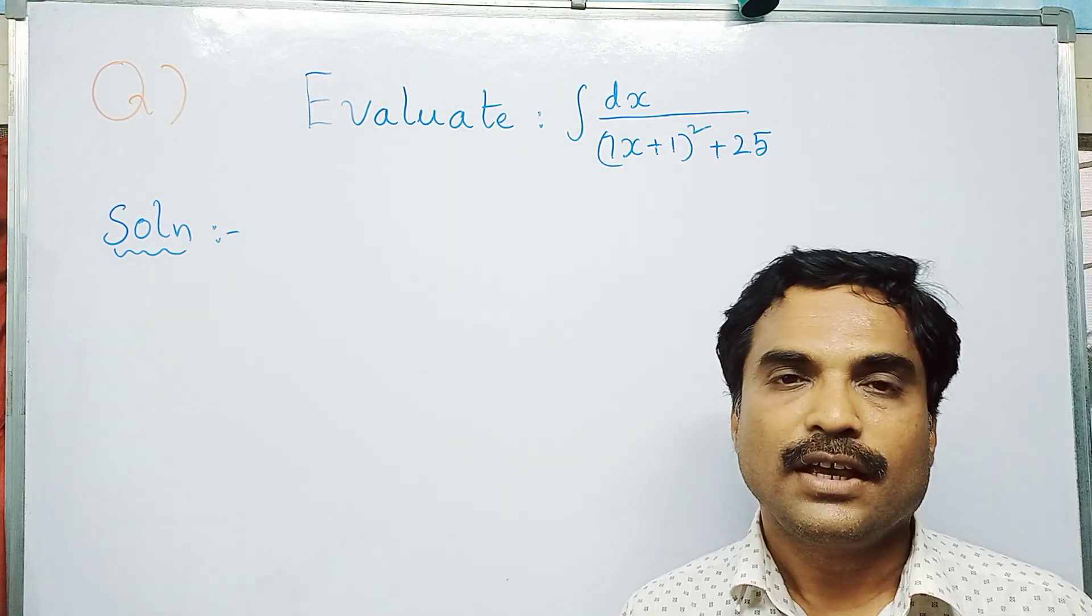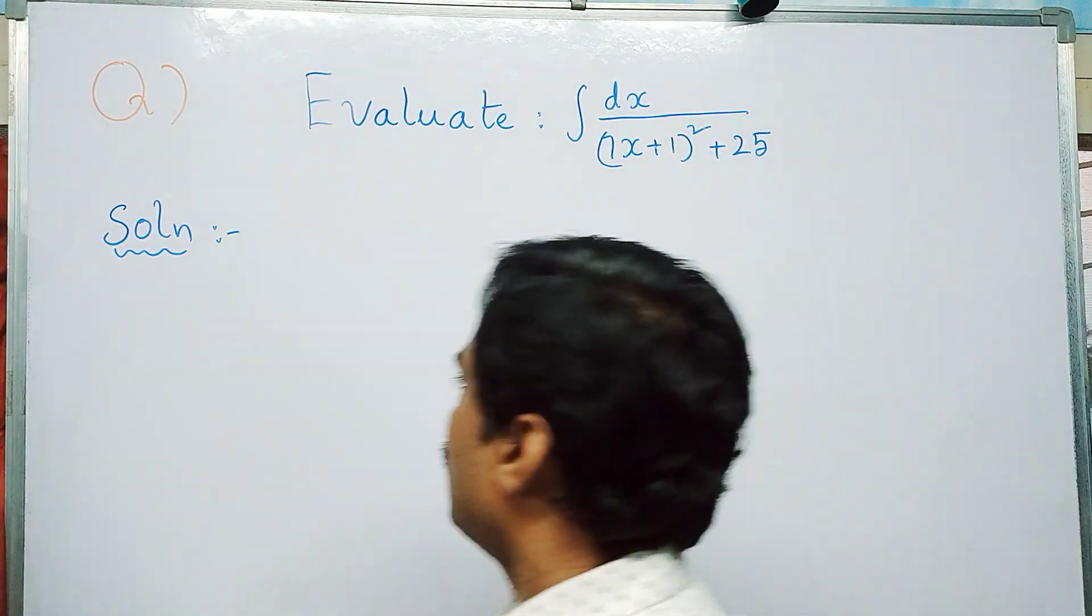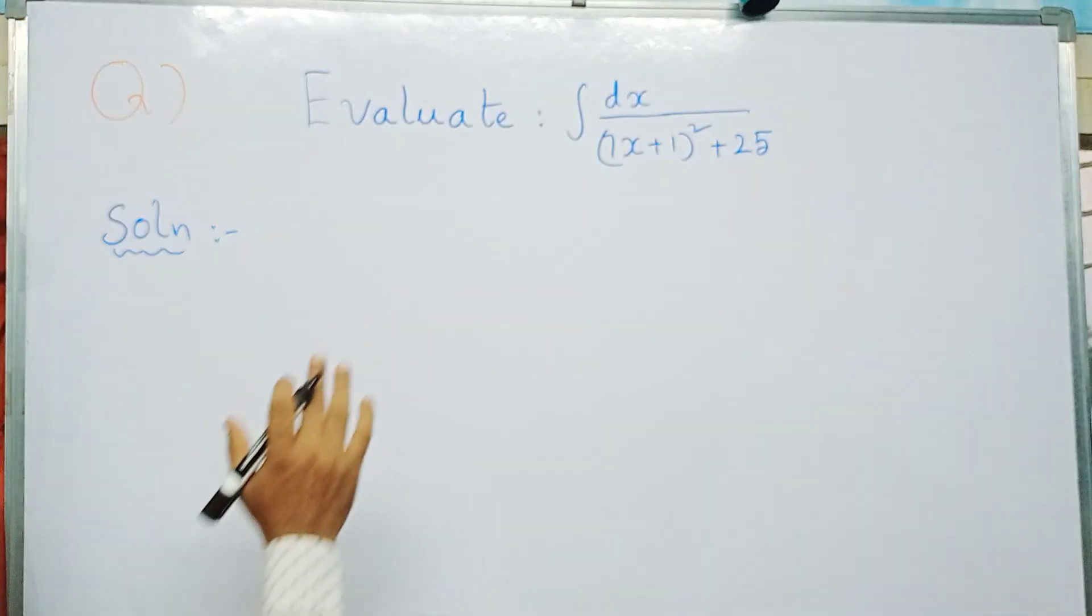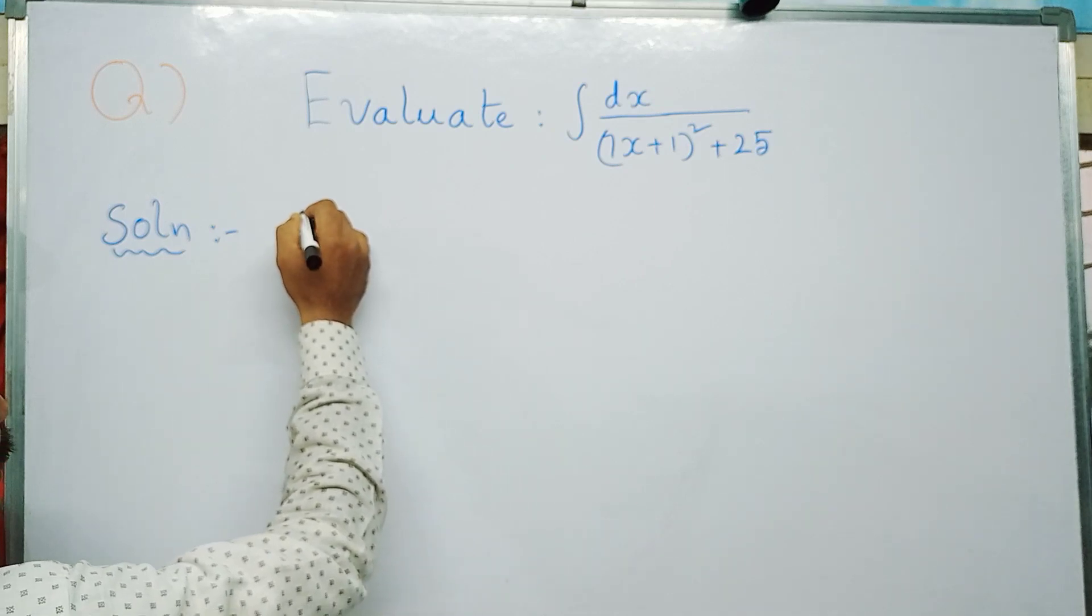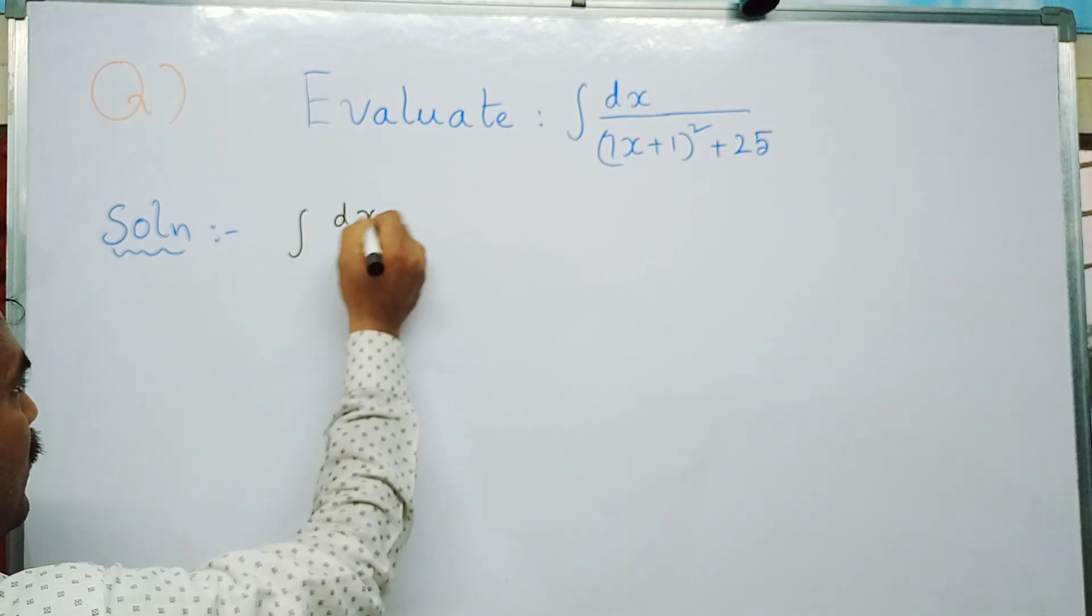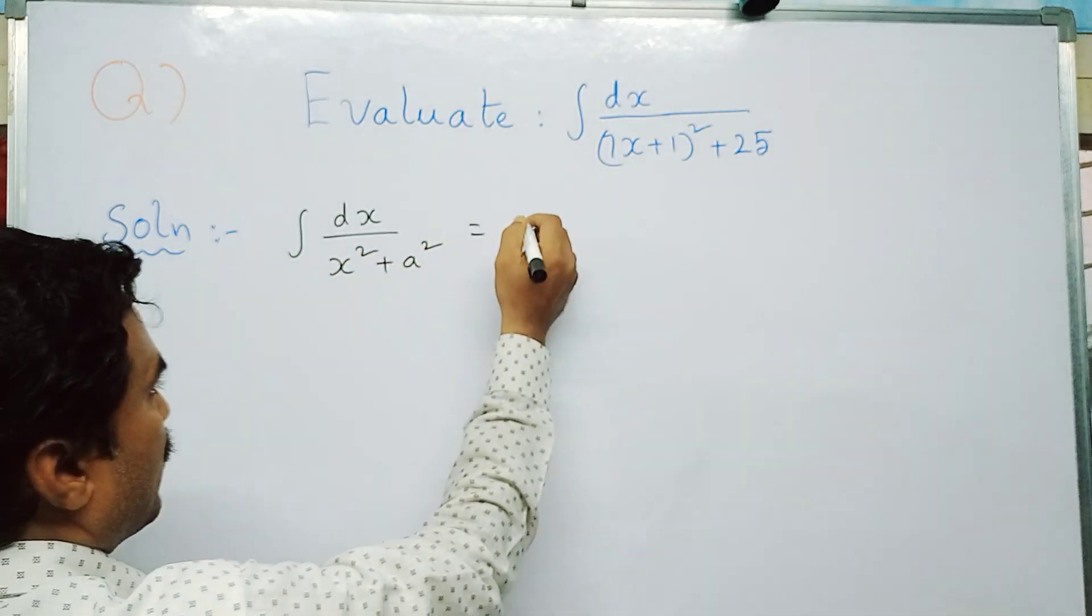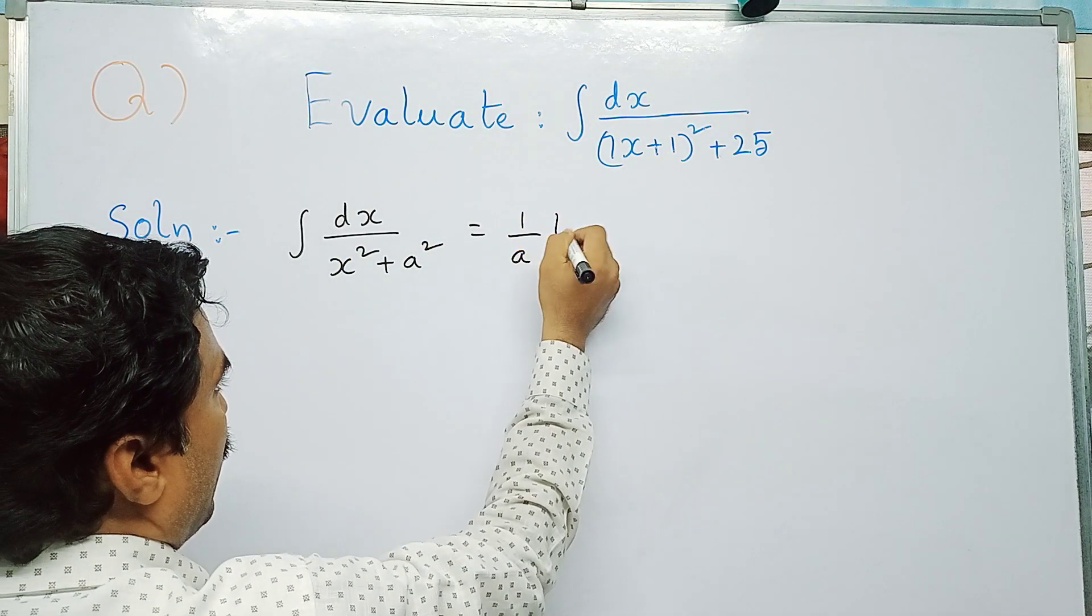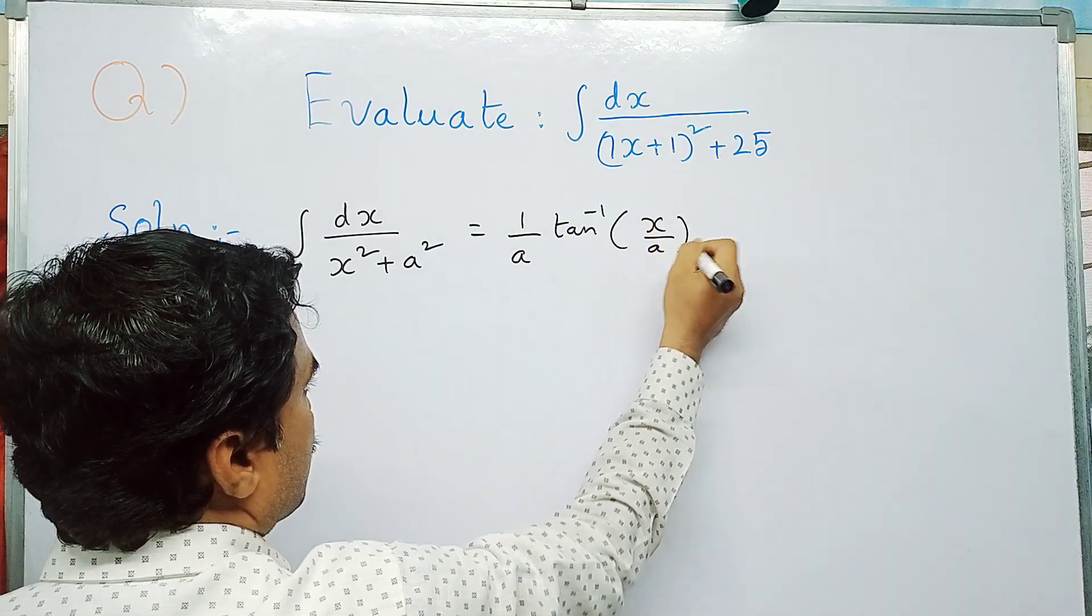First, we need to write the formula that is going to be used in this problem. We know that integral dx by x² plus a² can be written as 1 by a tan inverse (x/a) plus c. This formula is going to be used in this problem.